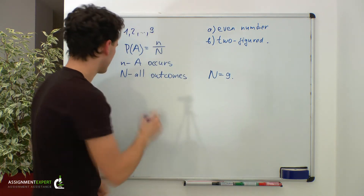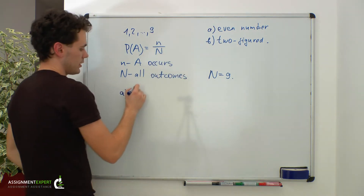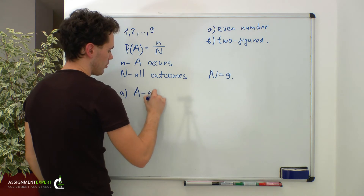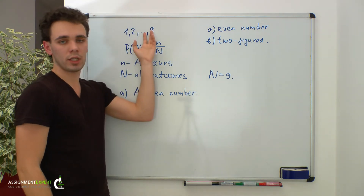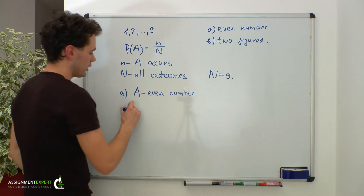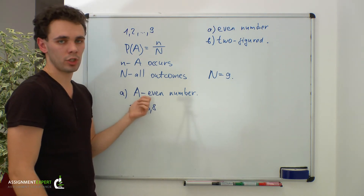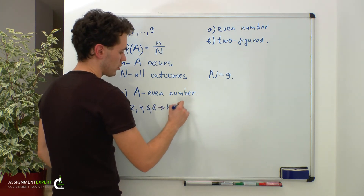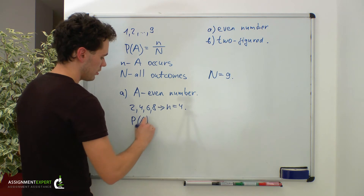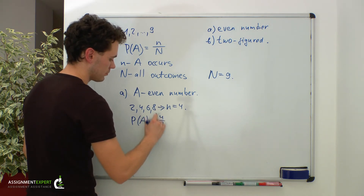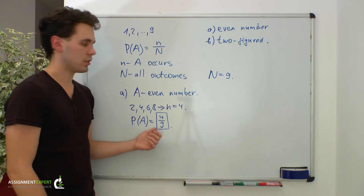Now let's have a look at case A. In case A, we need to find the probability of getting a card with an even number, so event A is getting a card with an even number. Among numbers 1 to 9, the even numbers are 2, 4, 6, and 8. When we get any of these numbers, event A will occur. Therefore, small n equals 4, and the probability of event A equals 4 over 9. So the answer for case A is 4/9 — the probability of getting a card with an even number.